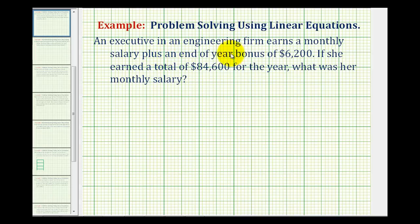An executive in an engineering firm earns a monthly salary plus an end of the year bonus of $6,200. If she earned a total of $84,600 for the year, what was her monthly salary?